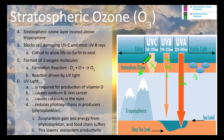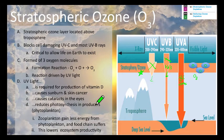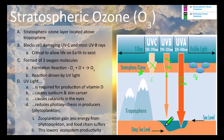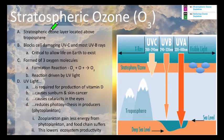What happens if we're exposed to a lot of UV light? In addition to sunburn and skin cancer, it can cause cataracts in the eyes and can reduce photosynthesis. If zooplankton have less energy from phytoplankton, the food chain suffers and overall ecosystem productivity goes down. So we want to prevent that from happening by maintaining a healthy ozone layer.